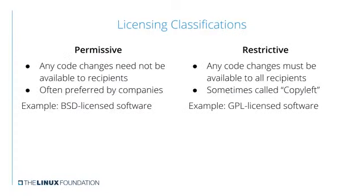There are two basic classifications of licenses. One is so-called permissive licenses. BSD is the best-known example of that. If you make changes to the code and use it in your product, you do not have to give it to other people that you distribute it to. This is often preferred by companies because they're reluctant to give all their changes out to other entities.